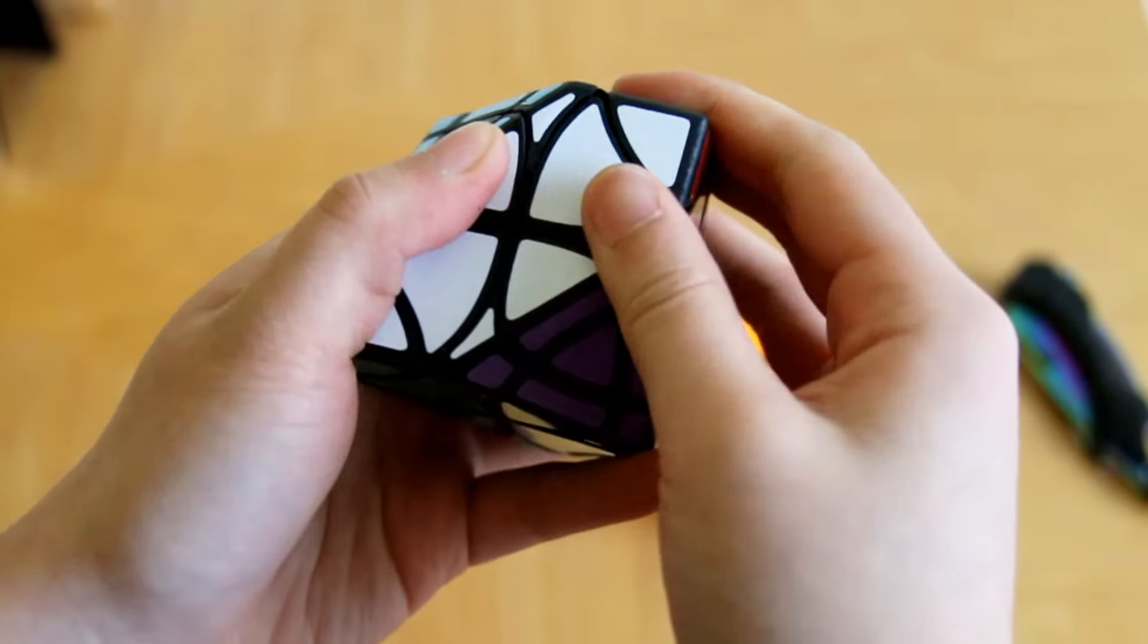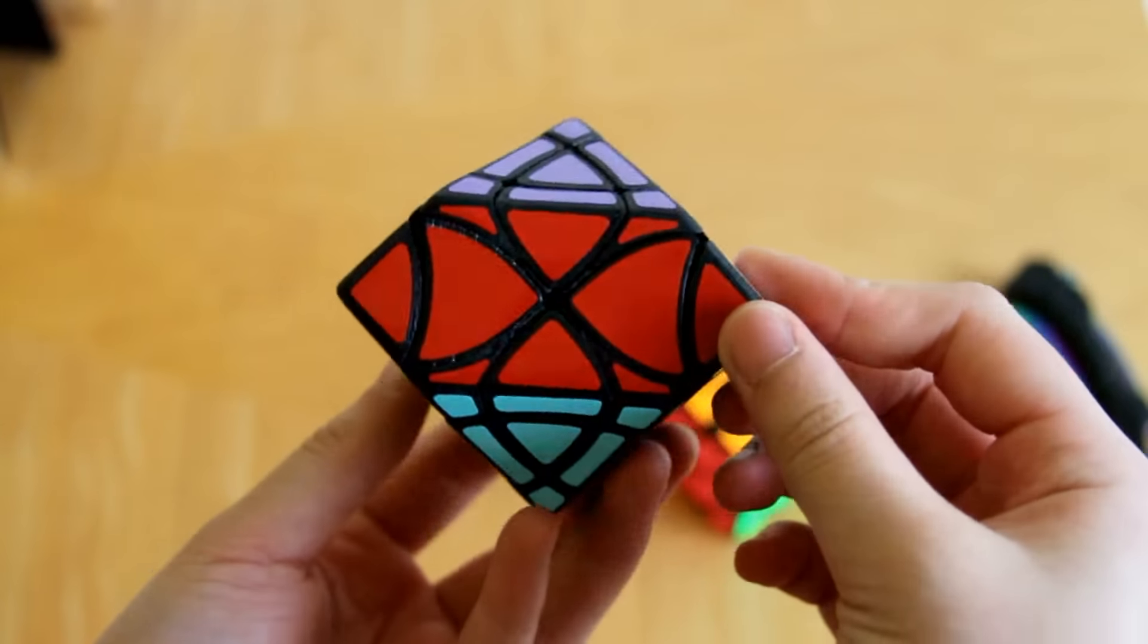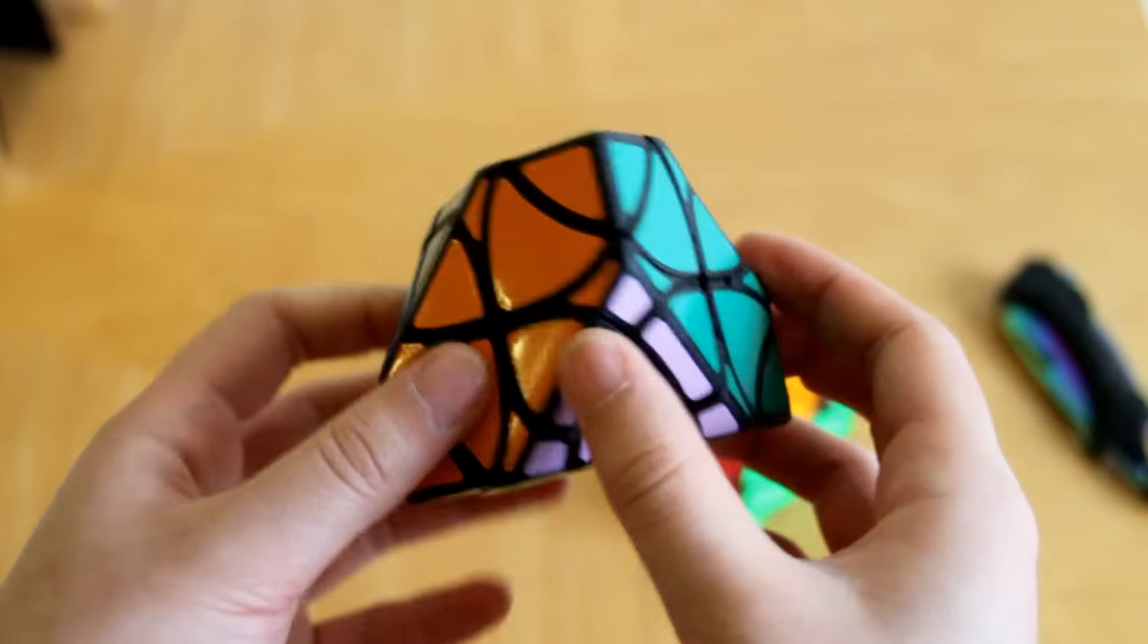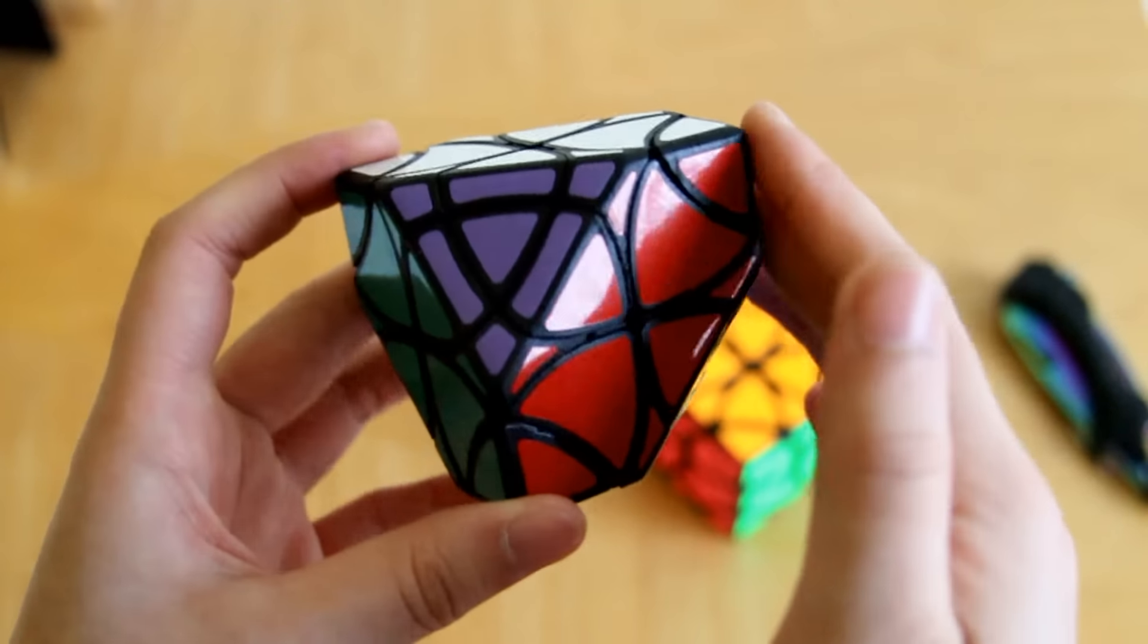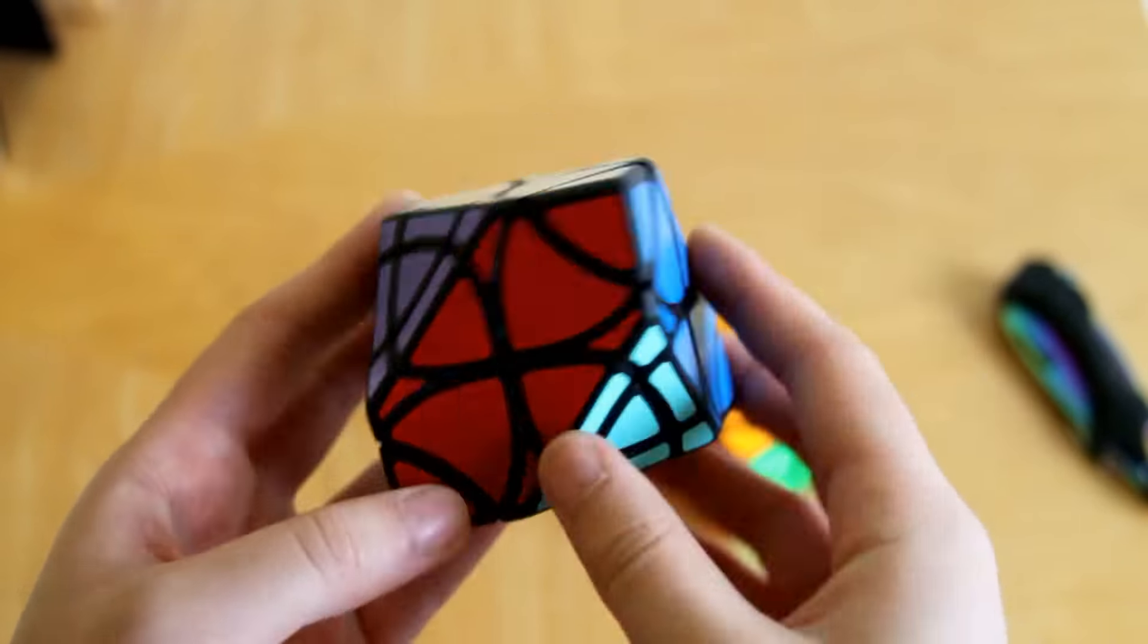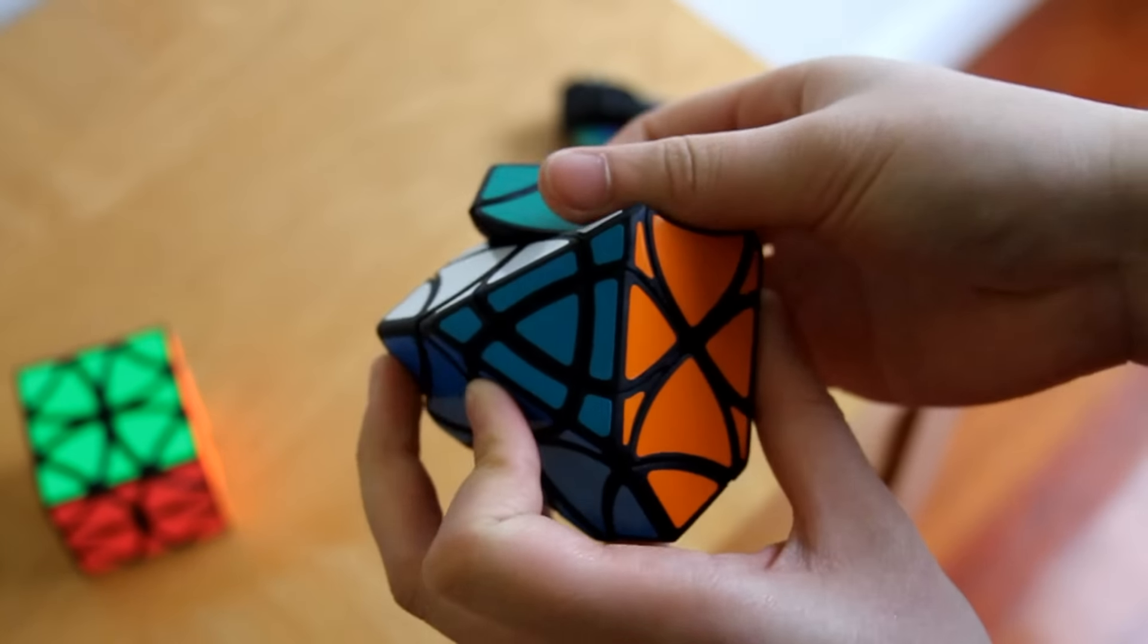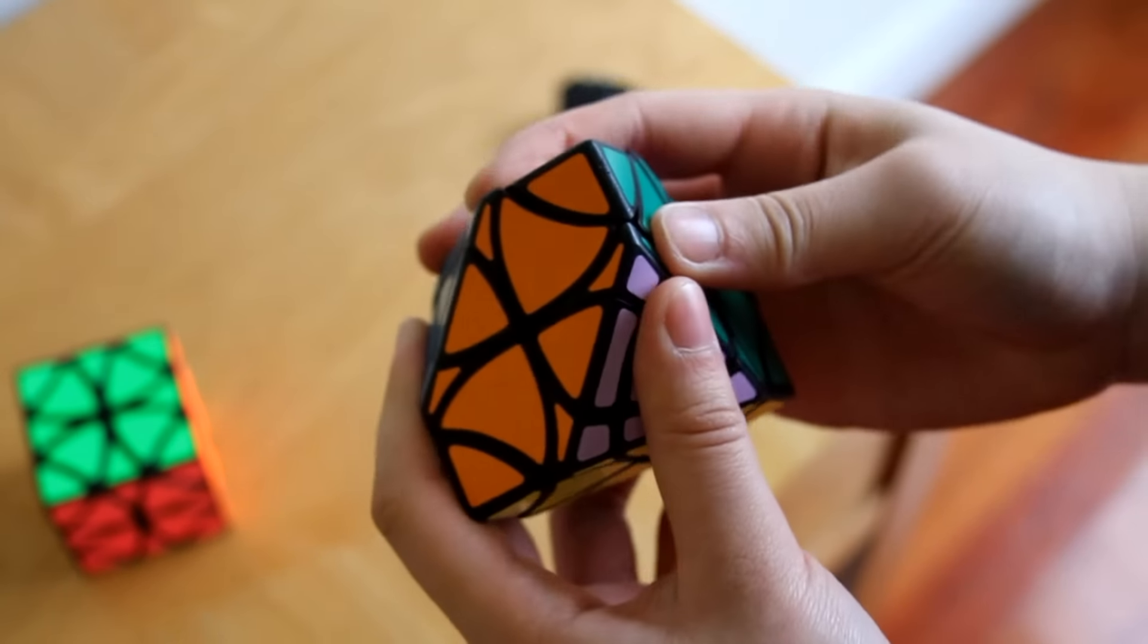Half truncated cubes are such a simple mod but I think they look really cool and they definitely provide a really fun challenge to a normal puzzle. This one looks really cool. I'm not going to scramble it quite yet just because I kind of want to play around with it and get used to it.